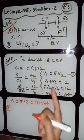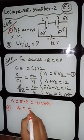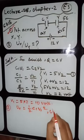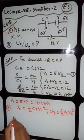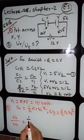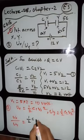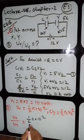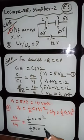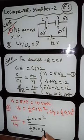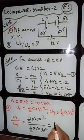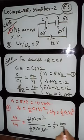Now the second part: find the ratio of potential energy. UX = ½ C1 V1², and UY = ½ C2 V2². So UX/UY = (½ × C × 10²) / (½ × 5C × 2²) = (C × 100) / (5C × 4) = 100/20 = 5. After cancelling C and ½, we get 1/5 × 100/4 = 5.